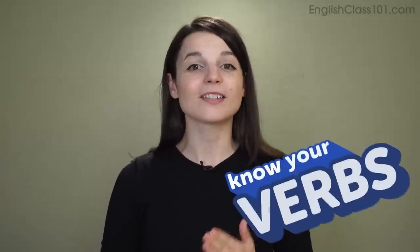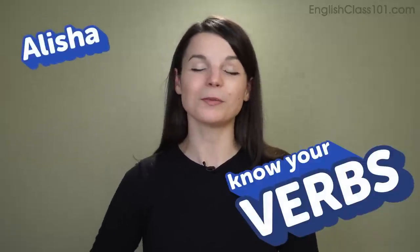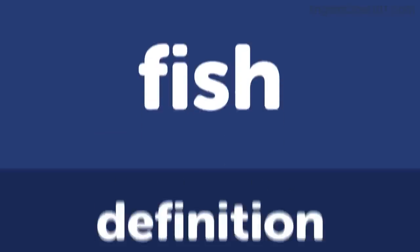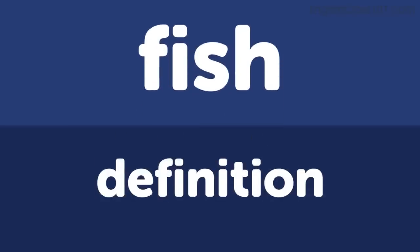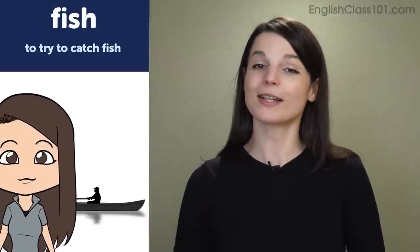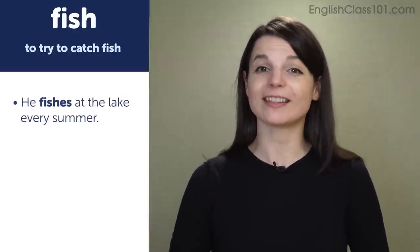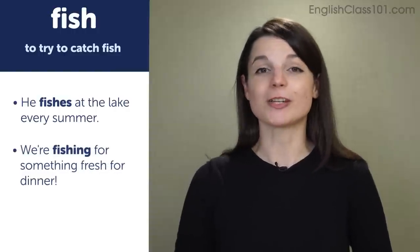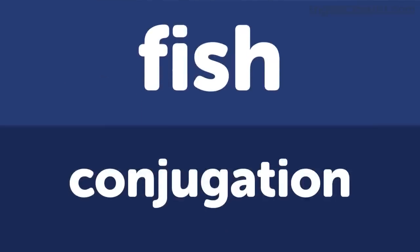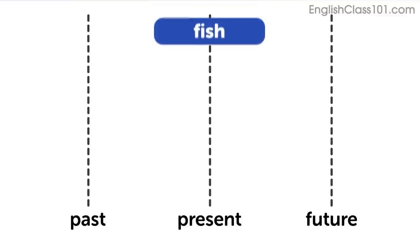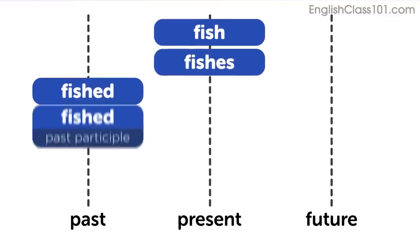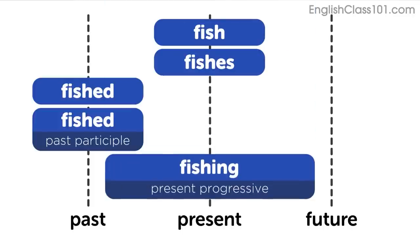Hi, everybody. Welcome back to Know Your Verbs. My name is Alisha, and in this episode we're going to talk about the verb 'fish.' The basic definition is to try to catch fish. Examples: 'He fishes at the lake every summer.' 'We're fishing for something fresh for dinner.' Conjugations: present — fish, fishes; past — fished; past participle — fished; progressive — fishing.